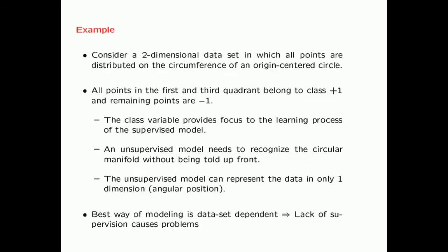To provide an understanding of unsupervised learning, consider the case where you have a two-dimensional dataset in which all points are distributed on the circumference of an origin-centered circle. Also imagine that all points in the first and third quadrant belong to class +1 and the remaining points are -1. The class variable provides focus to the learning process of the supervised model, and most learning models should be able to learn how the feature variables are related to the class variable.